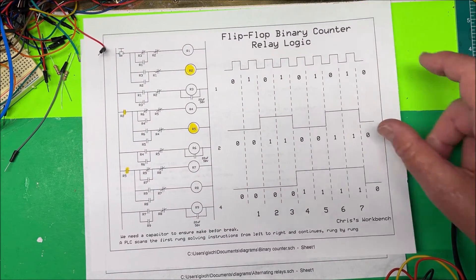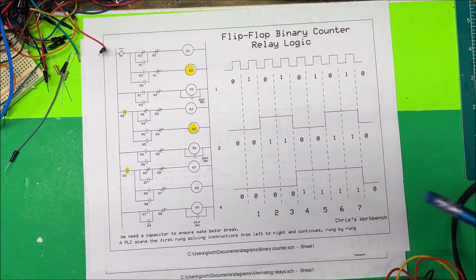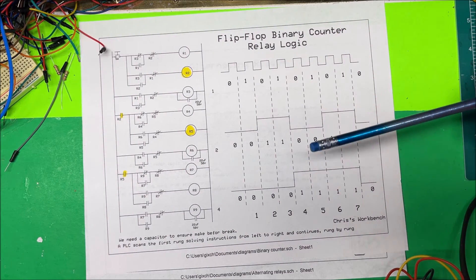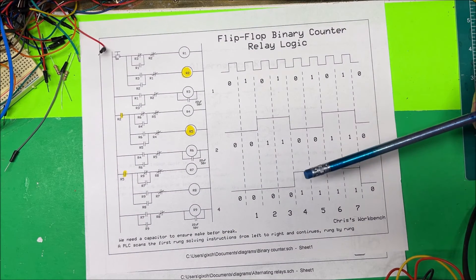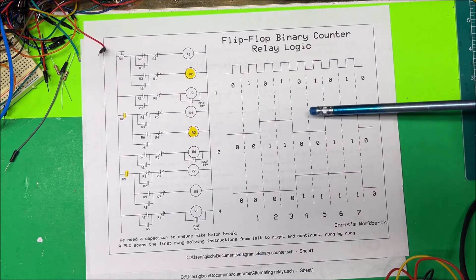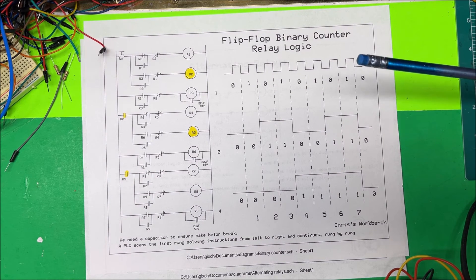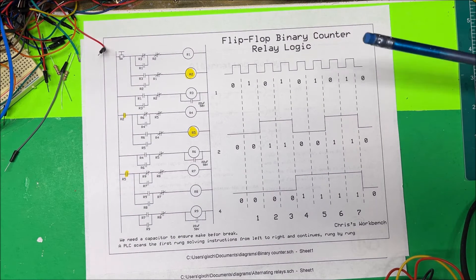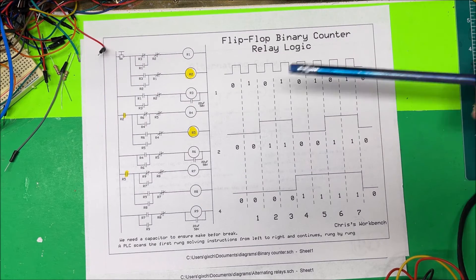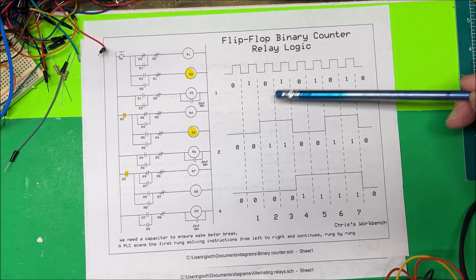I took the alternating relay and put three of them together, and I made a binary counter out of them. Last time we made a binary counter out of some D-type flip-flops, but I'm just going to do it with relays now.